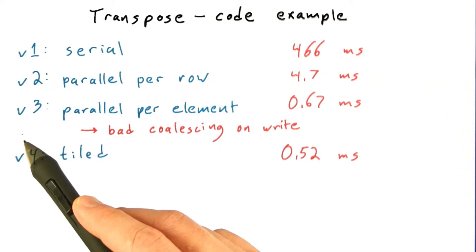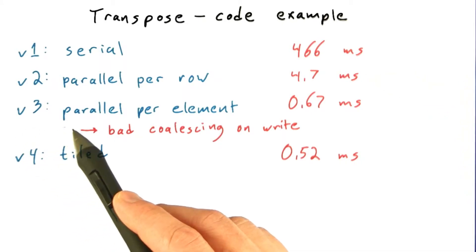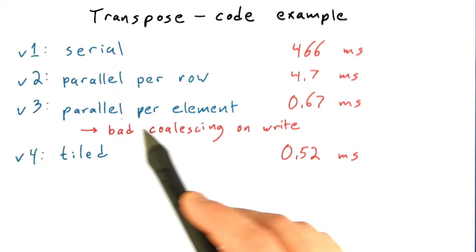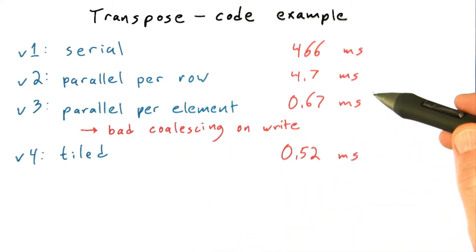Then in the third version, we extracted pretty much all the parallelism that the problem has to offer and assigned one thread per element of the matrix. We did this transpose operation now in sort of massive parallel, and now we got quite a bit better performance.